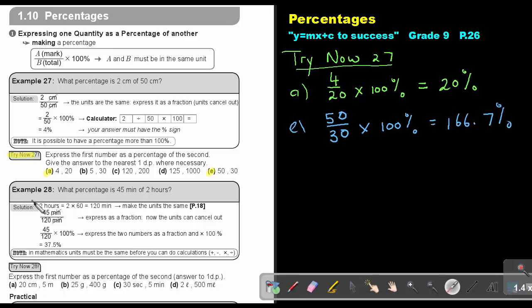Let's look at example 28. What percentage is 45 minutes of 2 hours? Now what is the problem? The units are different. So what must we first do? We must make the units the same. So to take hours to minutes, we must multiply by 60 and that's 120 minutes.